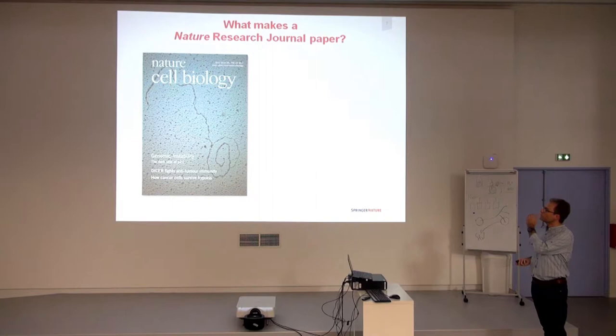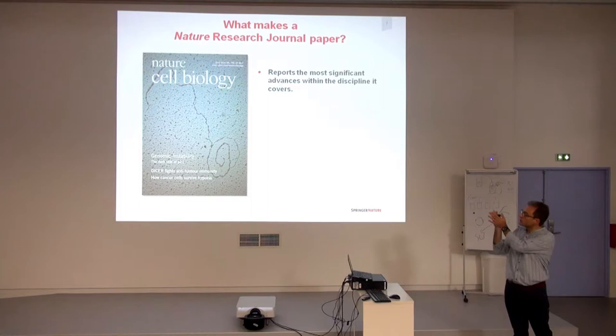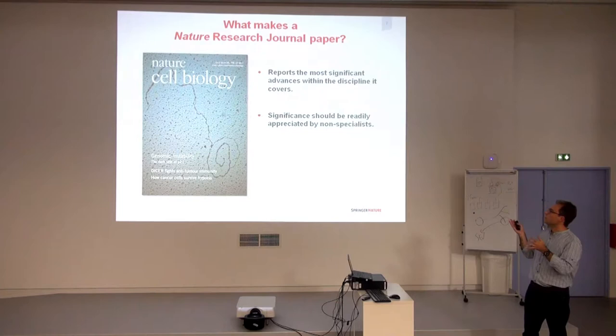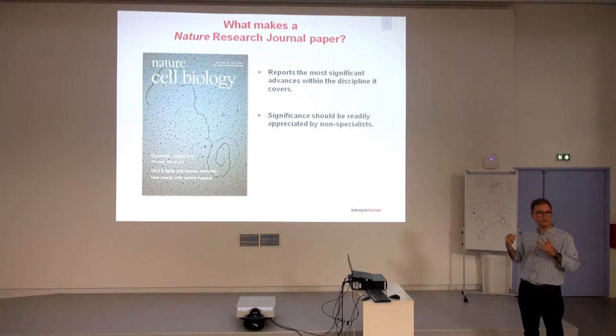What's the difference between a Nature paper and a paper published in, say, Nature Cell Biology? A paper published in a Nature Research journal reports the most significant advances within that particular discipline. So the best papers within cell biology would be published in Nature Cell Biology, but the relevance of the findings should still be clearly understandable by every cell biologist and beyond — it should be obvious to most other biologists in general.